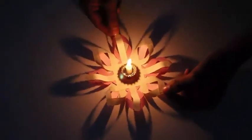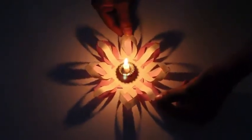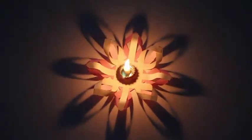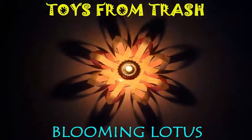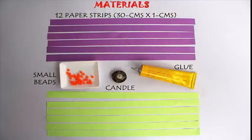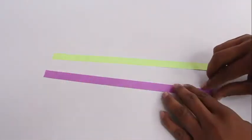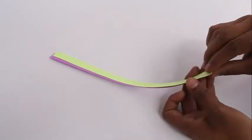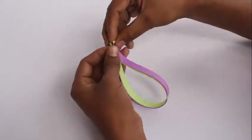We are going to make this very beautiful blooming lotus. Look at the play of light and shadows in this. For making this, you would require 12 strips of paper, 30 cm long and 1 cm wide. They can be magenta and green colors.